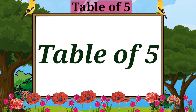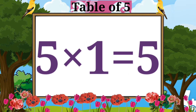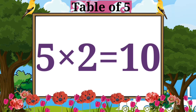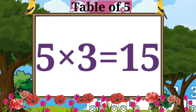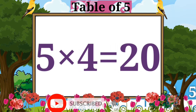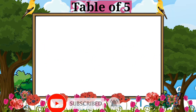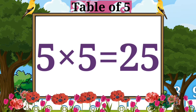Table of Five. Five ones are five. Five twos are ten. Five threes are fifteen. Five fours are twenty. Five fives are twenty-five.